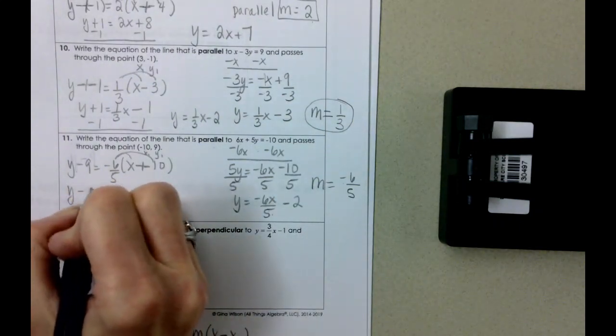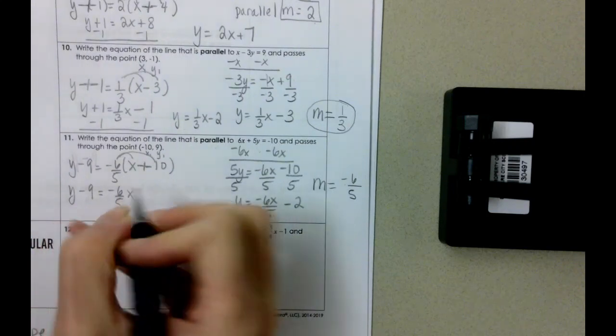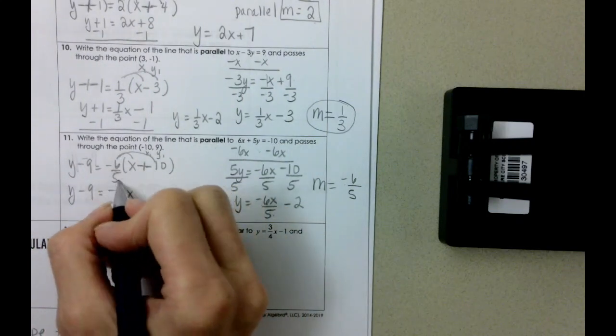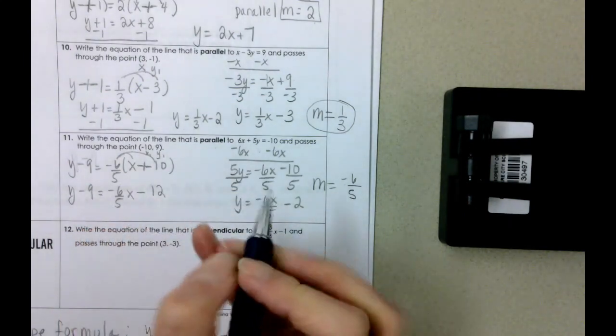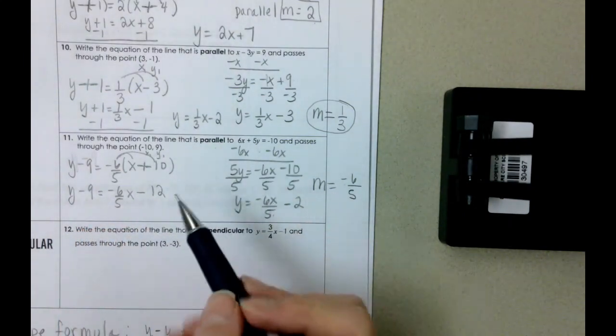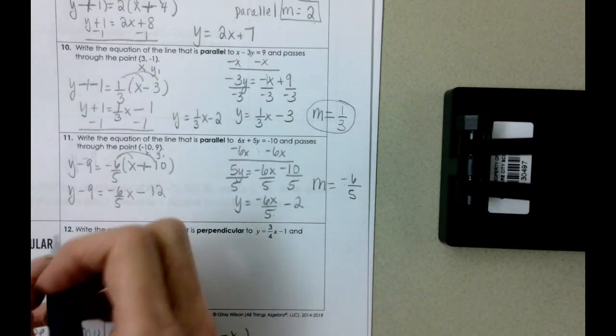Y minus 9 equals negative six fifths x, and then negative six fifths times 10 is negative 12. Just mentally checking here for a second, but yes, I agree with that statement.